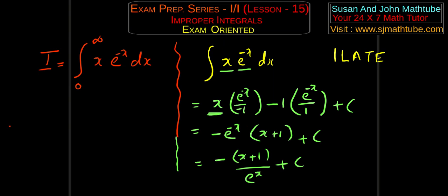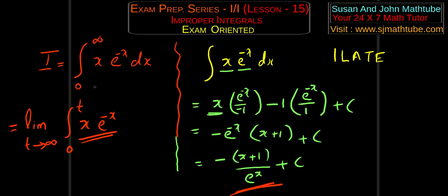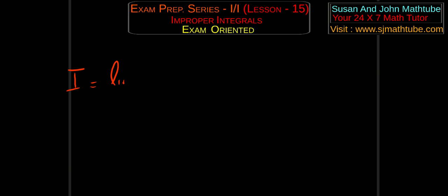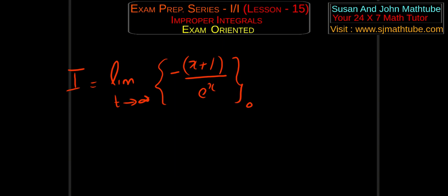Now on the other side, we convert the question into a limiting problem. This is a Type 1 improper integral because one of the limits is infinity. So I is equal to limit as t tends to infinity of −(x+1)/e^x evaluated from 0 to t.